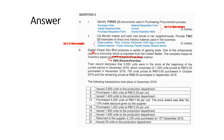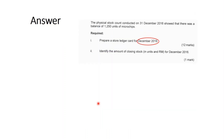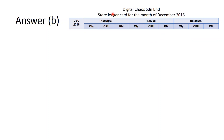For part B, the first requirement is to prepare a store ledger card for December 2016. We prepare the store ledger card with the company name Digital Calls Neighborhoods, for the month of December 2016. The card has 4 columns: the date, receipts — recording stock in with quantity, cost per unit, and total RM — issues, which records all stock out from the store with quantity, cost per unit, and RM, and finally, balances, recording quantity, cost per unit, and RM.